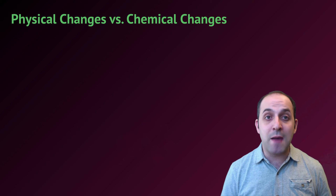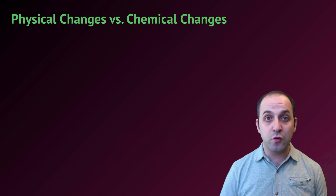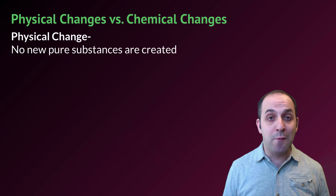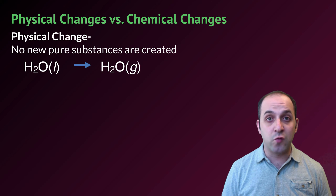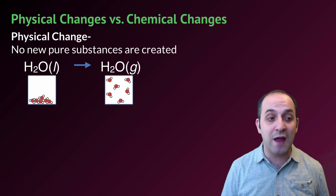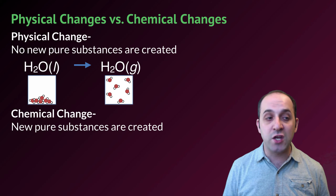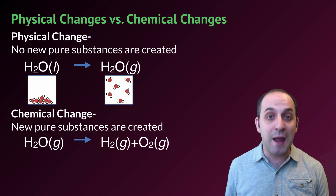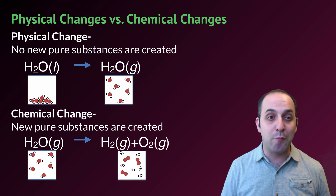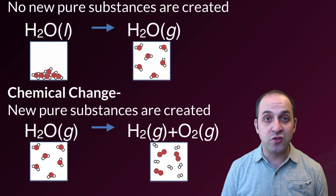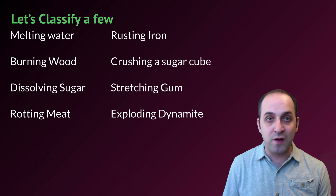Another important thing about matter is that it can undergo different types of changes. We usually think about these as physical changes versus chemical changes. In a physical change, no new pure substances are created — for example, water as a liquid becoming water as a gas: we still have water at the end, just in a different phase. In a chemical change, new pure substances are created — for example, breaking water into hydrogen gas and oxygen gas, because we now have new substances we did not start with.